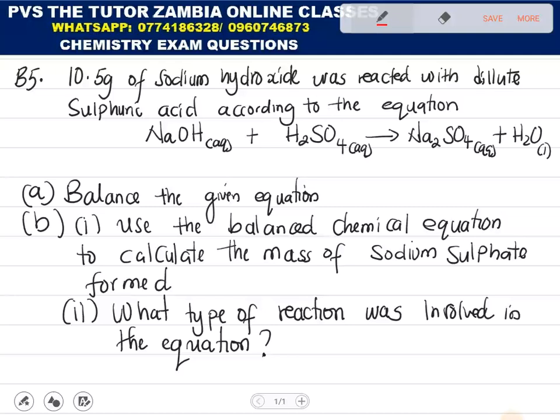Part A says, balance the given equation. Part B1 says, use the balanced chemical equation to calculate the mass of sodium sulfate formed. Part B2 says, what type of reaction was involved in the equation.